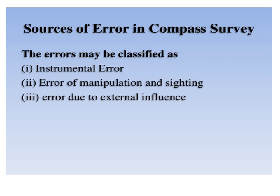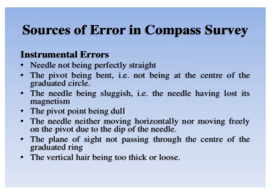This slide refers to sources of error in compass survey. The errors may be classified as instrumental error, error of manipulation and sighting, and error due to external influences. Instrumental errors include: needle not being perfectly straight; the pivot being bent and not at the center of the graduated circle; the needle being sluggish or having lost its magnetism; the pivot point being dull; the needle not moving freely on the pivot; the plane of sight not passing through the center of the graduated ring; and the vertical hair being too thick or loose.